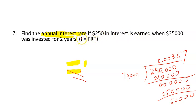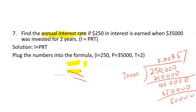So again, I means interest, P means principal, R means rate or interest rate, T means time. So first we copy down the formula I equals PRT. And because it says $250 in interest, that tells us I. And this one says invested, so that's the principal. And two years, that's the time. So we're going to plug everything in here.